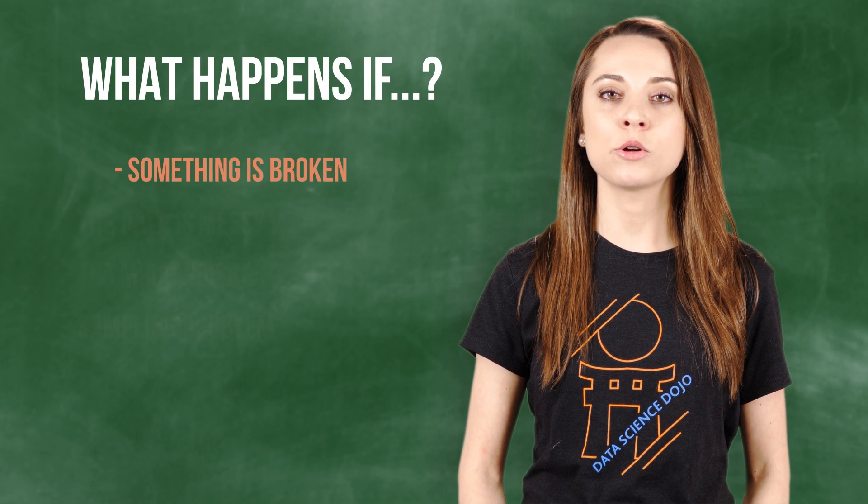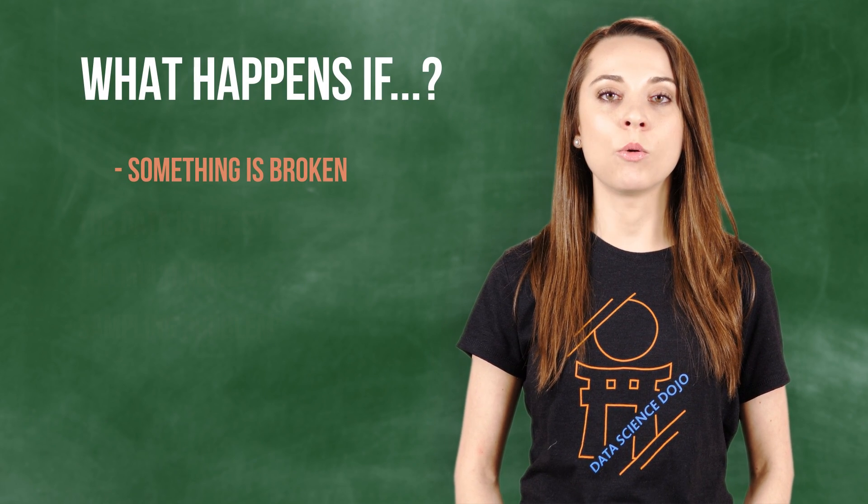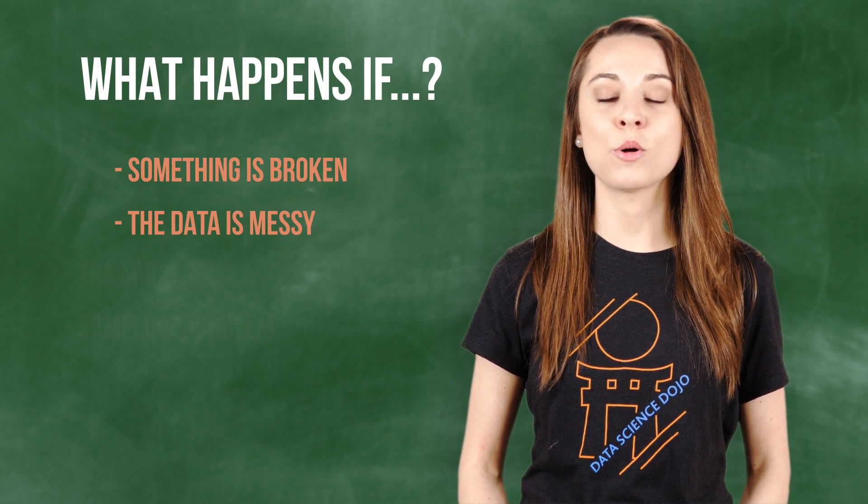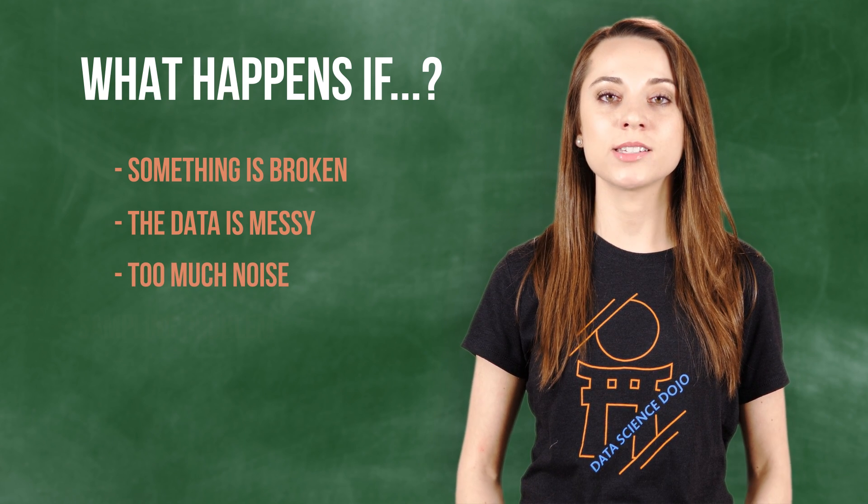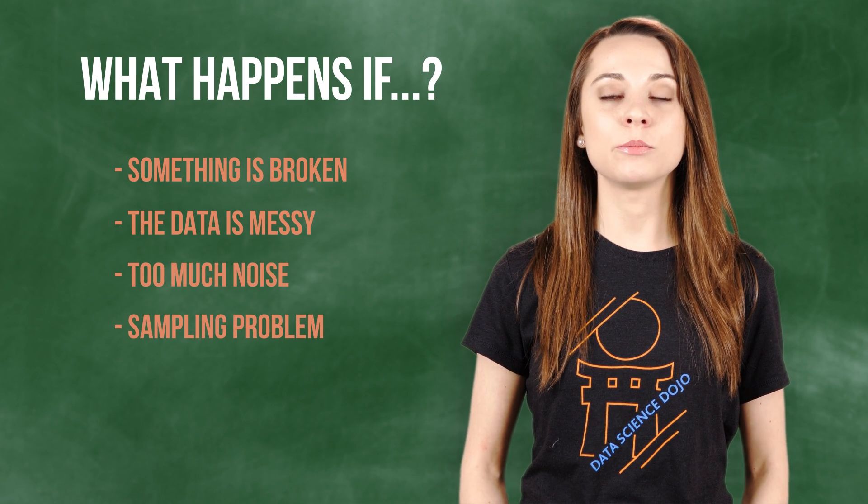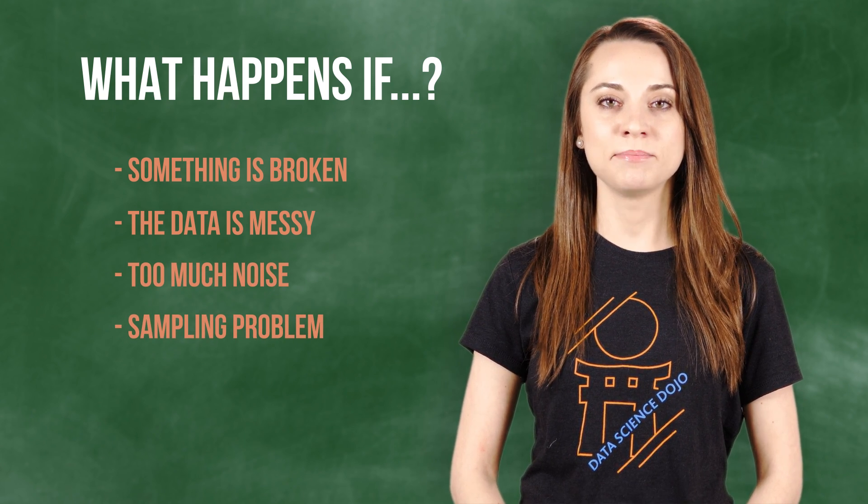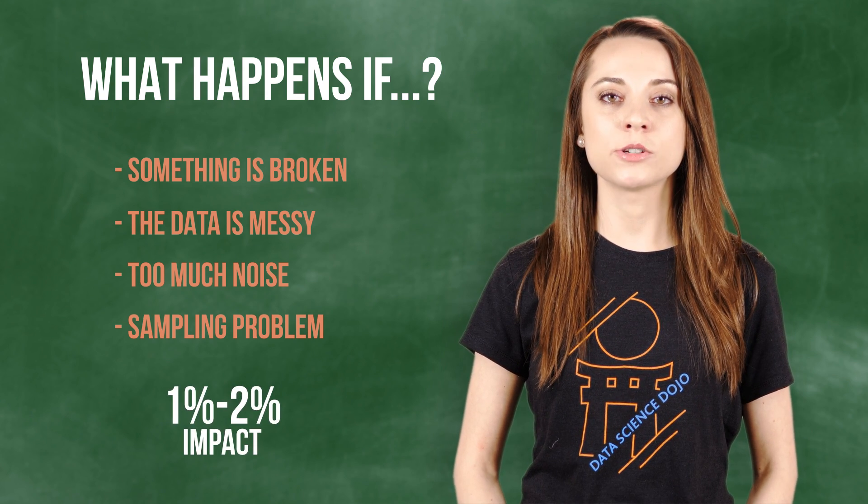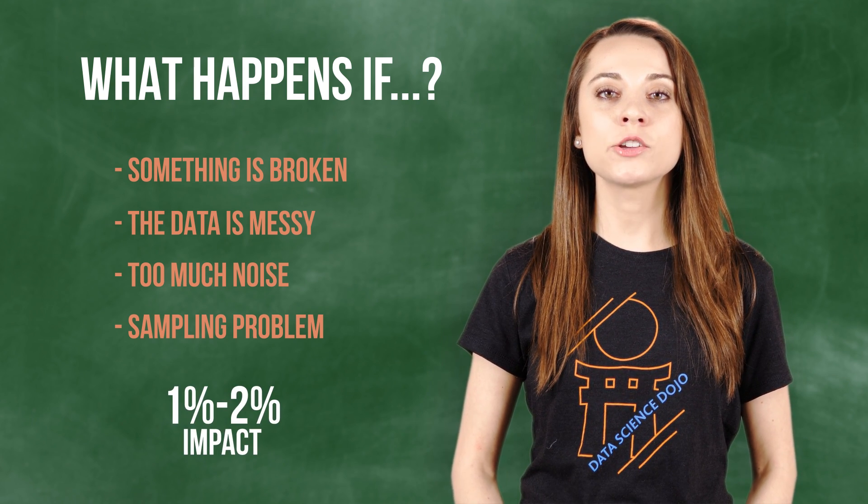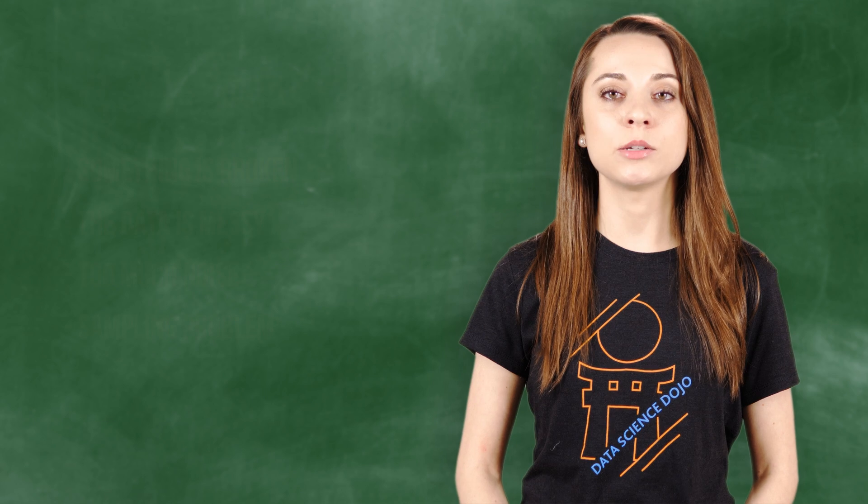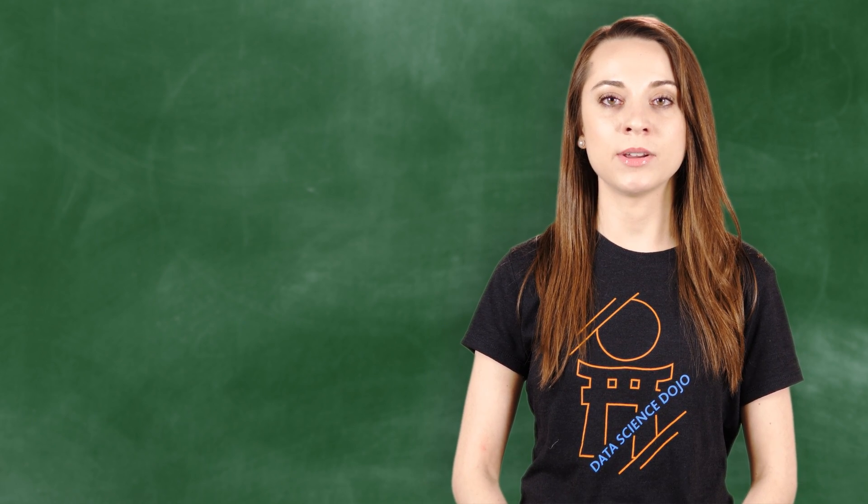But what happens if something is broken, or funky, or the data is messy and the quality is off, or there's too much noise. Maybe there's a sampling problem and you don't randomize correctly. It could be a 1 to 2% impact, but you should make sure that your A-B test is being conducted properly first by setting up an A-A test.